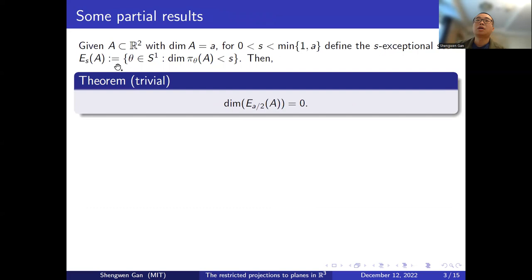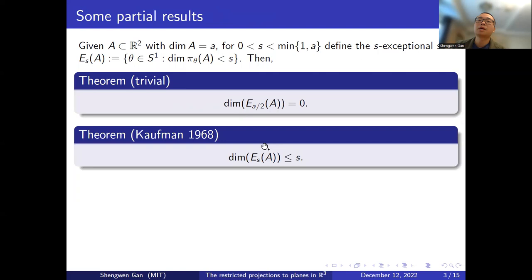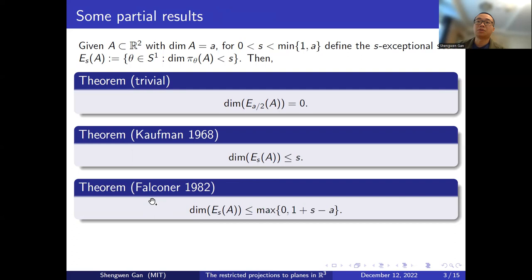Let me talk about some partial results on this exceptional set conjecture. The first result is a trivial result, which says that if we choose our parameter S to be A over 2, then this exceptional set has dimension 0. The second result is due to Kaufman. He proved that the exceptional set has Hausdorff dimension less than S. And the third result is by Falconer. He proved that the dimension of this exceptional set is less than the maximum of 0 and 1 plus S minus A.